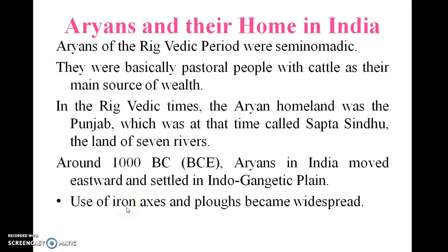Aryans of the Rigvedic period were semi-nomadic; they used to do cattle rearing as their main occupation. In the Rigvedic time, the Aryan homeland was in Punjab, also called Sapta Sindhu since there are nearly seven rivers running through it. Around 1000 BC, Aryans in India moved eastward and settled in the Indo-Gangetic plain near the Ganga. They used iron axe and ploughs to become widespread.